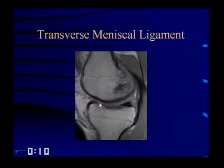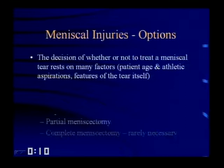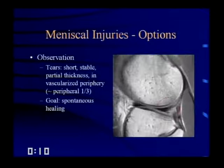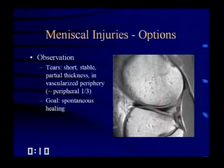The decision of whether to treat a meniscal injury depends on the patient's age, activity level, and features of the tear itself. Options are observation, repair, and partial meniscectomy. Complete meniscectomies are rarely done today because they lead to premature osteoarthritis. A tear may be observed if it's short, stable, partial thickness, and in the vascularized periphery — only the peripheral third of the meniscus is vascularized, and that area tends to heal or can be repaired with sutures.